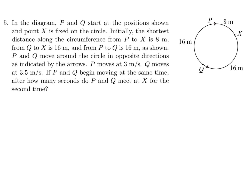In the diagram, P and Q start at the positions shown and point X is fixed on the circle. Initially the shortest distance along the circumference from P to X is 8, from Q to X is 16, and from P to Q is 16. P and Q move around the circle in opposite directions — P moves at 3 meters per second, Q moves at 3.5 meters per second. If P and Q begin moving at the same time, after how many seconds do P and Q meet at X for the second time? We'll use speed equals distance over time, or time equals distance over speed.